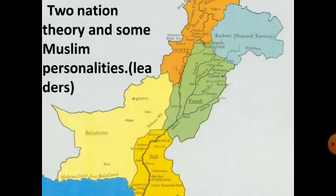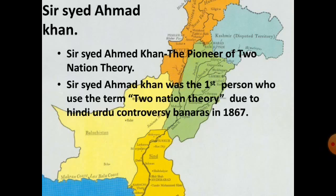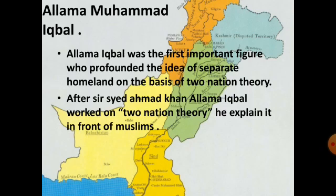The Two-Nation Theory was associated with key Muslim personalities. The first to use the term was Sir Syed Ahmad Khan, who used it to describe Muslims as a distinct nation. Allama Iqbal later defined and elaborated the concept very well, explaining the need for a separate state for Muslims.